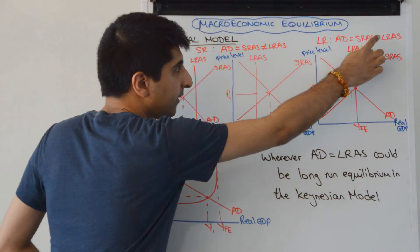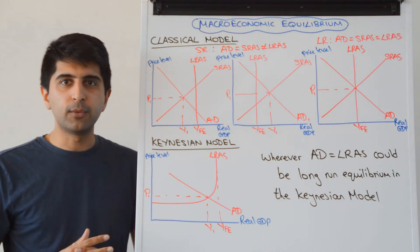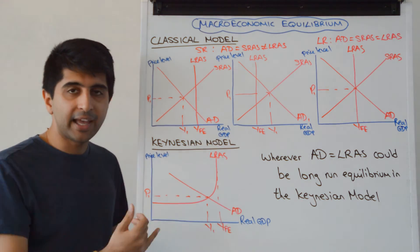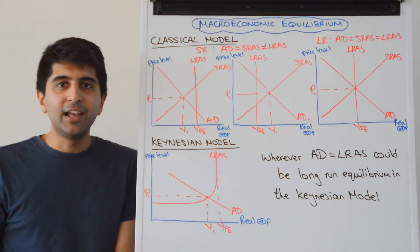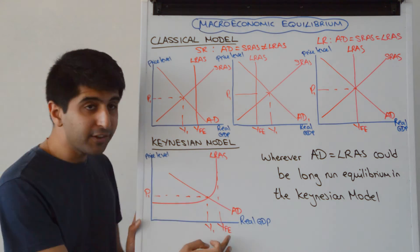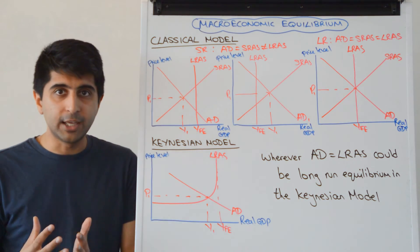The Keynesian way of showing macroeconomic equilibrium is so much easier. Remember the Keynesian LRAS curve looking like that? Wherever AD cuts it, that could be a long-run equilibrium in the Keynesian model. So what I've shown here, AD cuts LRAS. We have Y1 and P1. Even though we're not at YFE, according to Keynesians, that could be a long-run equilibrium.